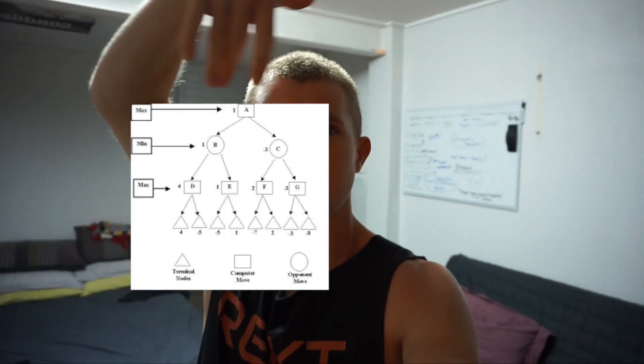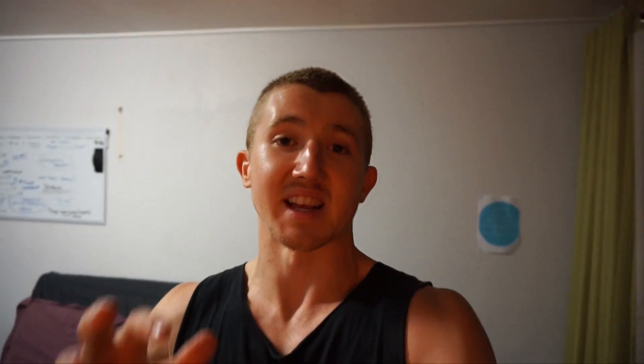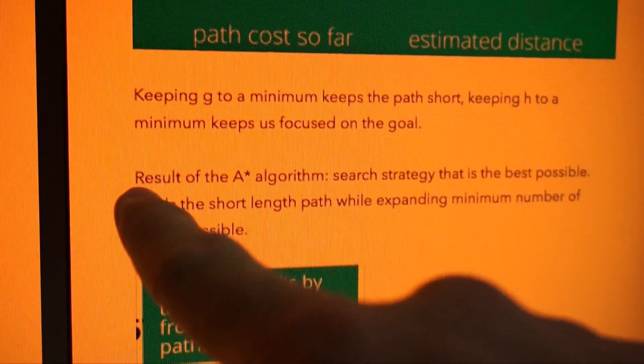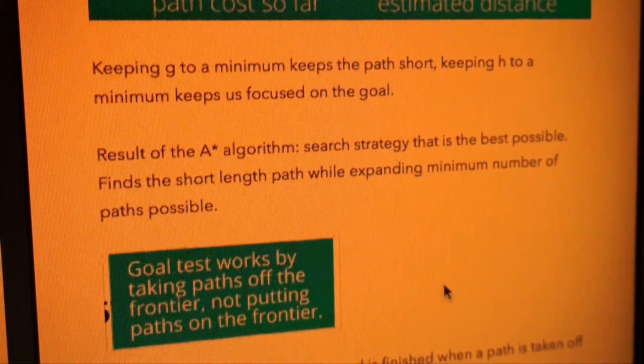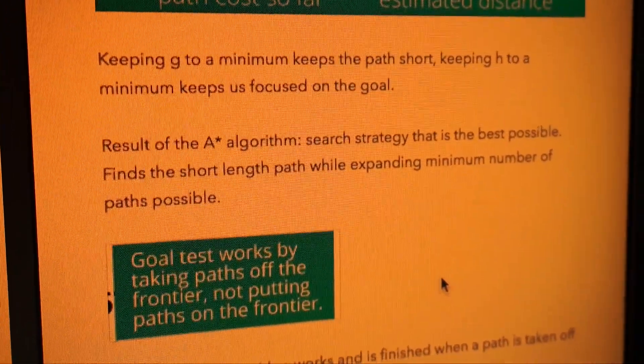Essentially, if you imagine a big Christmas tree and you start at the top and go down each different branch, you have lots of different pathways to get to the bottom. Or if you imagine a map problem where you're at one destination and have to find the quickest route to the next destination, search algorithms can help with that. There are different search algorithms like A* search, which is one of the most important in the artificial intelligence field. A* search is defined as a search strategy that finds the shortest path length while expanding the minimum number of paths possible.